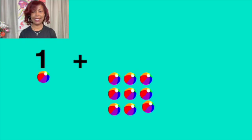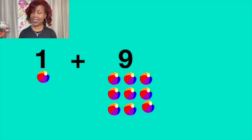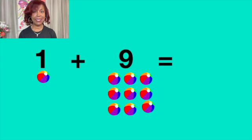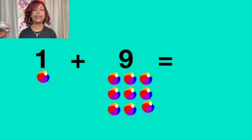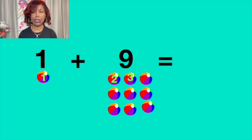Uno más nueve igual a diez. One plus nine equals ten. Vamos a contar. Let's count. Uno, 1. Dos, 2. Tres, 3. Cuatro, 4. Cinco, 5.